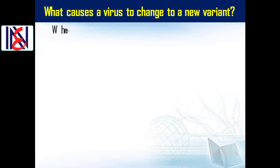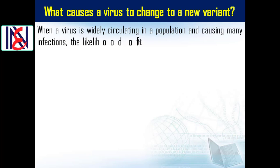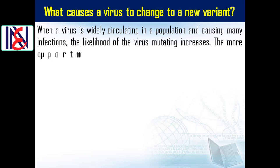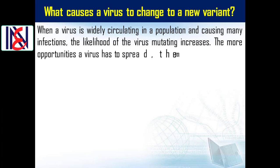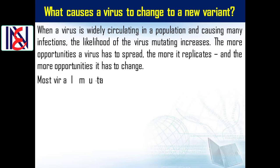When a virus is widely circulating in a population and causing many infections, the likelihood of the virus mutating increases. The more opportunities a virus has to spread, the more it replicates, and the more opportunities it has to change.